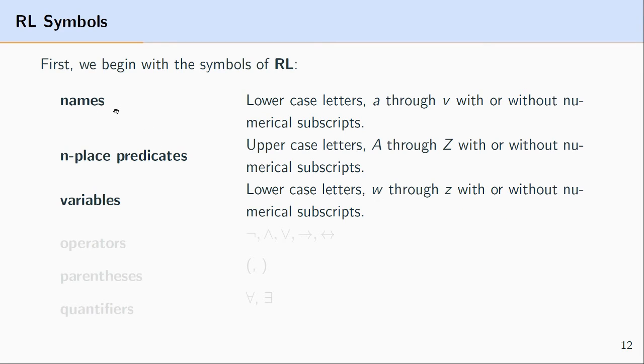The next symbol to look at are called variables. Variables refer to lowercase letters w through z with or without numerical subscripts. So for example, x will be a variable, y will be a variable, z will be a variable, as well as w. And again, since we want an infinite number, x sub 1, x sub 2, x sub 3 are all variables.